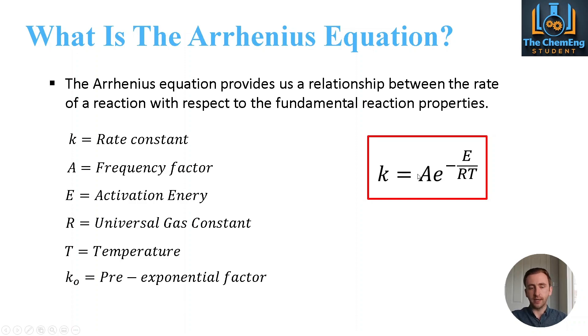A is your frequency factor. E is your activation energy. R is the universal gas constant. And T is of course your temperature. Now I've included the term k0 because sometimes instead of having A, your frequency factor, sometimes it can be denoted as the pre-exponential factor. So these are just some of the considerations if you see a different way of writing the Arrhenius equation. But in general, your activation energy and your frequency factor can be found experimentally. Likewise, the value of k can be found experimentally as well.